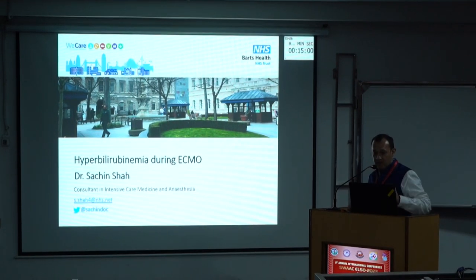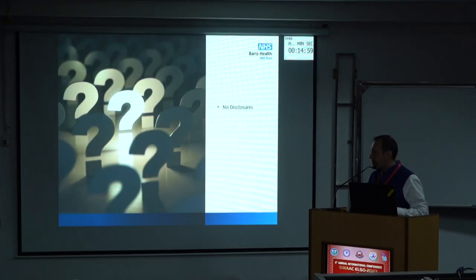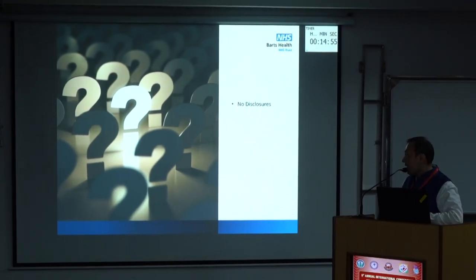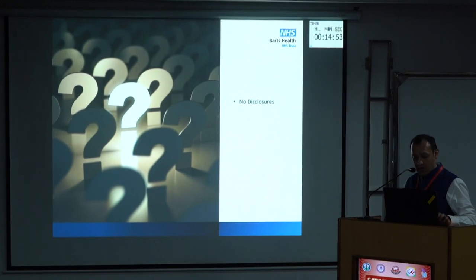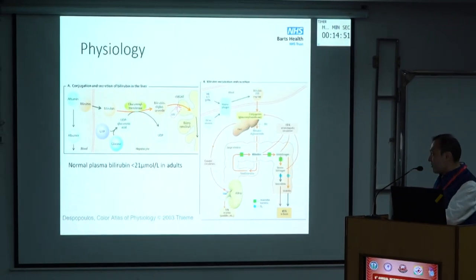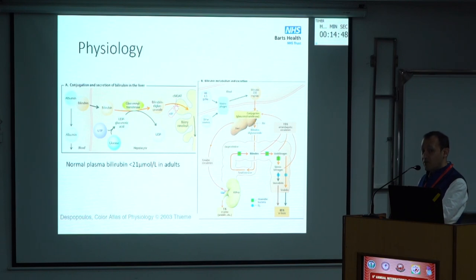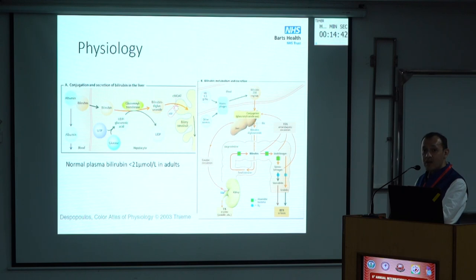Apologies, I am in a bit of a rush so I am going to go through this talk quickly. There is no conflict of interest. I am talking about hyperbilirubinemia on ECMO. I thought while writing this talk, where should I start? I was initially unsure about this topic, but then I realized we have a chance to shine in yellow by talking about hyperbilirubinemia. So I thought I'd start with basics — let's go back to medical school physiology.